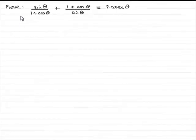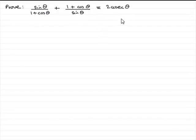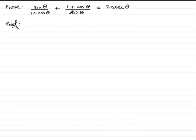In this example we've got to prove that sine theta over 1 plus cos theta, plus 1 plus cos theta over sine theta, is identical to 2 cosec theta. In the usual way, put down 'proof' and select which side you think is the most complicated. The left hand side is clearly the most complex, as we've got a couple of terms and we need to show it equals one term.